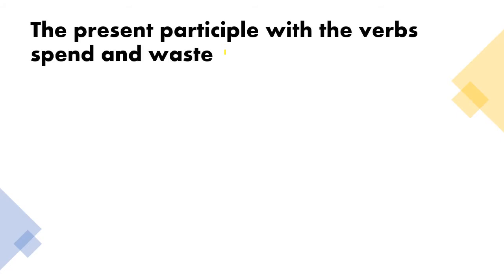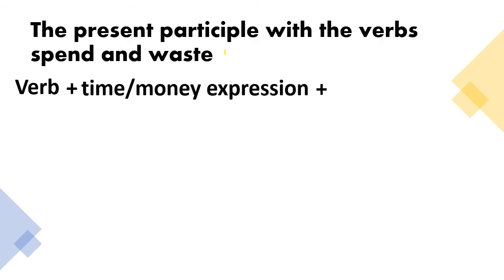Present participle is also used with verbs spend and waste. The pattern with this verb is verb plus time or money expression and present participle. So, for examples, we will be using highlights. Yellow indicates verb. Green indicates time or money expression. And the blue indicates present participle.